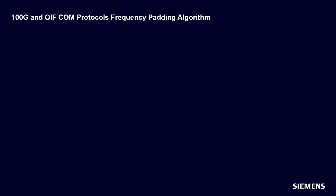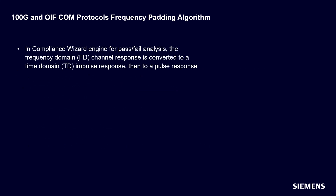Additional improvements have been made to the 100 gigabit and OIF-COM algorithms. In the Compliance Wizard engine for pass-fail analysis, frequency domain channel response information of the S-parameters is converted to a time domain impulse response, and then sometimes converted to a pulse response, depending on the analysis. The IFFT function is used to convert from the frequency domain to the time domain.